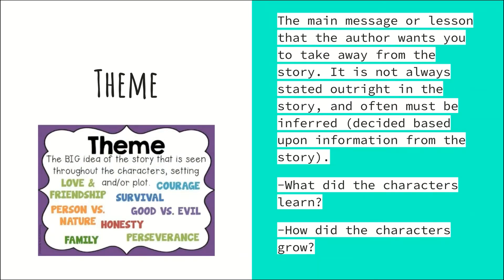The last story element is theme. Theme can be confusing because the author doesn't usually state it outright — it's something you have to infer and decide based on information from the story. The theme is the main message or lesson the author wants you to take away. Think of it as the big idea seen throughout the story in the characters, setting, and plot. Ask yourself: What did the characters learn through the course of the story? How did they grow and change? Did their character traits stay the same, or did they adapt and realize that what they were doing before was wrong or causing them problems?